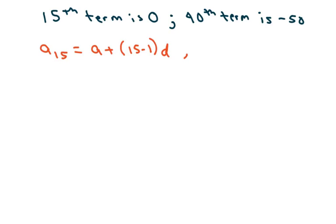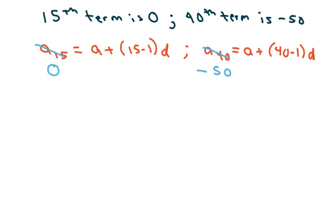And a sub 40 equals a plus 40 minus 1 times d. So I'm going to write this out as negative 50 equals a plus 39d, and 0 equals a plus 14d.